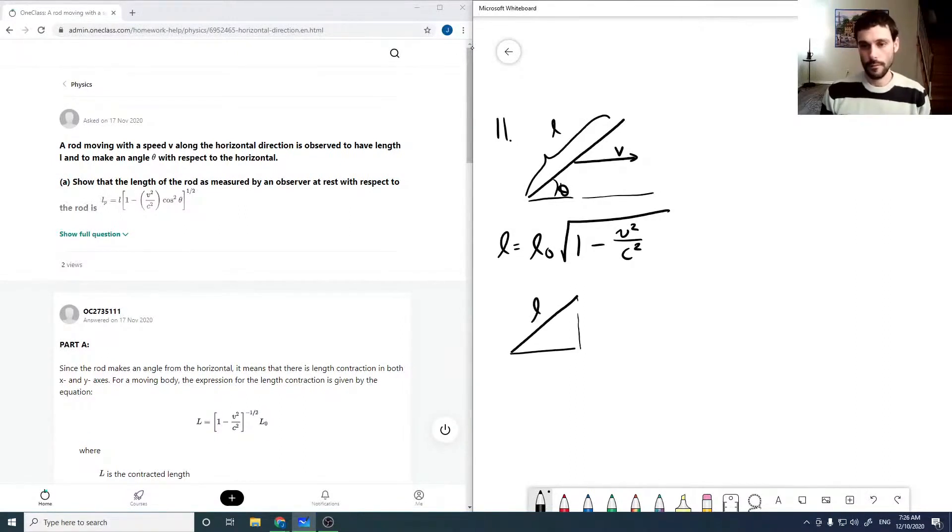So if that's its length, and that's theta, then that's L cos theta, and that's L sine theta. So that means that our X direction is going to be compressed. So our LX is going to be our X direction, which is L cos theta, square root of 1 minus V squared over C squared.